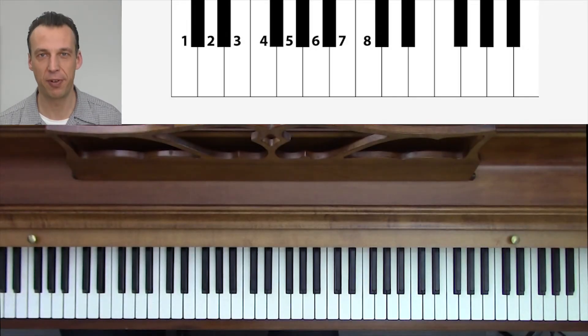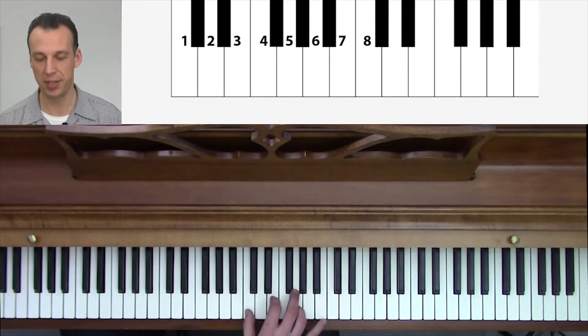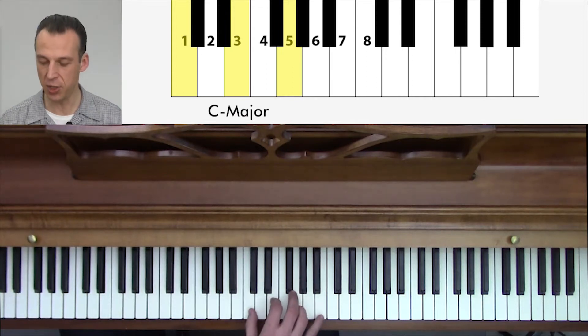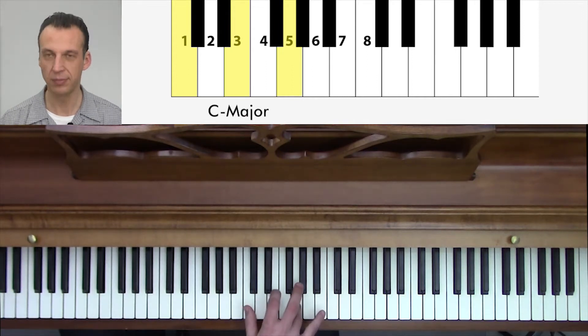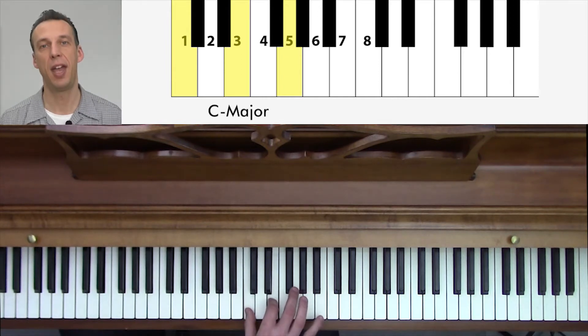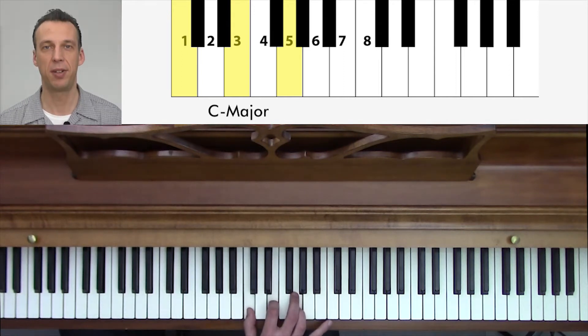So I told you we can derive chords from the major scale. Let me show you how that works. Let's take a C major chord for instance. We get the notes C, E and G, or the 1st, the 3rd and the 5th note of the C major scale. And together they form the C major chord.